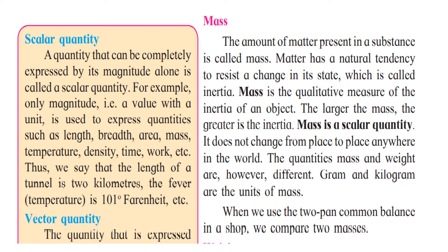Mass is the qualitative measure of the inertia of an object — larger the mass, the greater is the inertia. Mass is a scalar quantity because only magnitude is assigned to it. It does not change from place to place anywhere in the world — the mass remains the same wherever you move it. Mass and weight are however different. In our general day-to-day life we always say weight, but actually it is the mass.